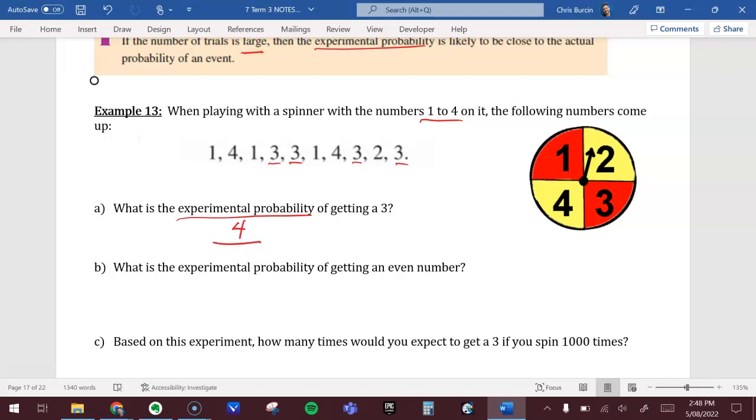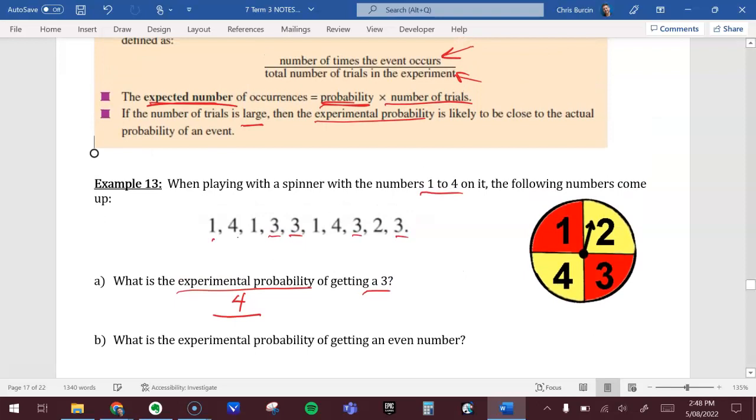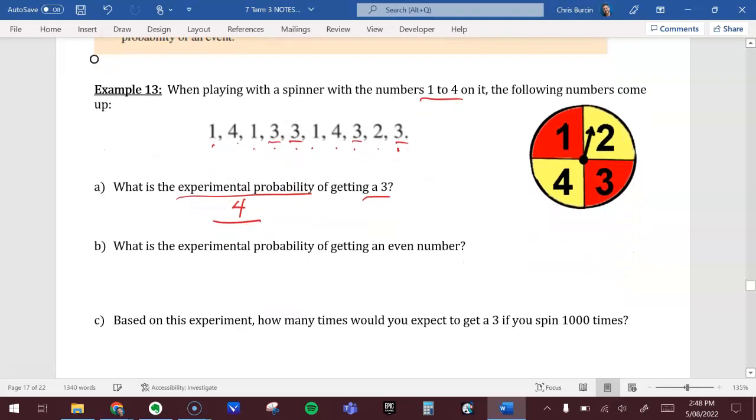That's the number of times we hit three. And out of how many? One, two, three, four, five, six, seven, eight, nine, ten. We had ten total spins. Four out of ten reduces to two over five. So there is our probability of getting a three.